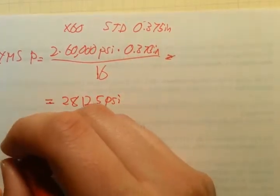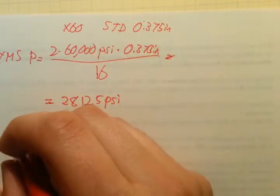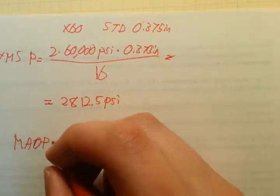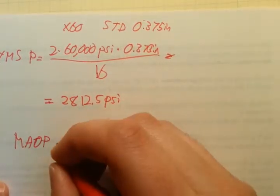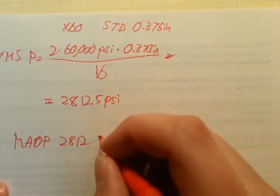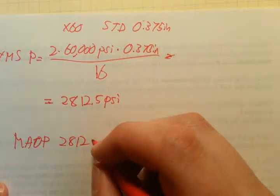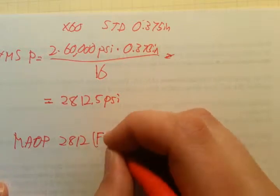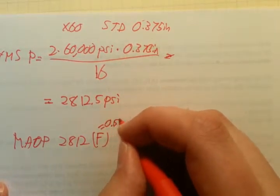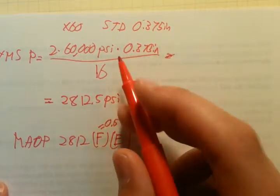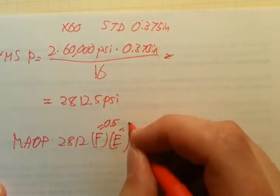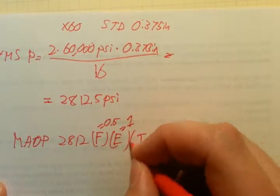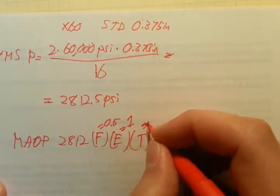So to get our MAOP, maximum allowable operating pressure, we're going to take that and multiply it by our three different safety factors. F, since it's class 3, is 0.5. E—it's newer pipe, they're calling it X60, so we don't have to worry about it—we're going to leave it as one. Same thing with T; we weren't given a temperature.